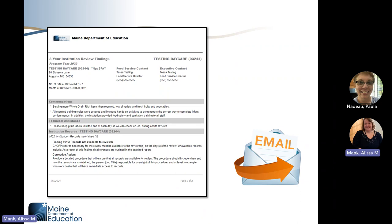Once the report has been completed, the state agency reviewer will schedule an exit interview to go over the review and discuss any findings. Once the exit interview is complete, the child nutrition administrative assistant will email the institution the administrative review report. The report now includes commendations, technical assistance discussed, findings, and corrective action needed. Due to an audit from USDA, the review report will also include the citations mentioned earlier. With all this information included, some review reports might be quite long — please do not be discouraged by that. A long report does not mean a bad review.